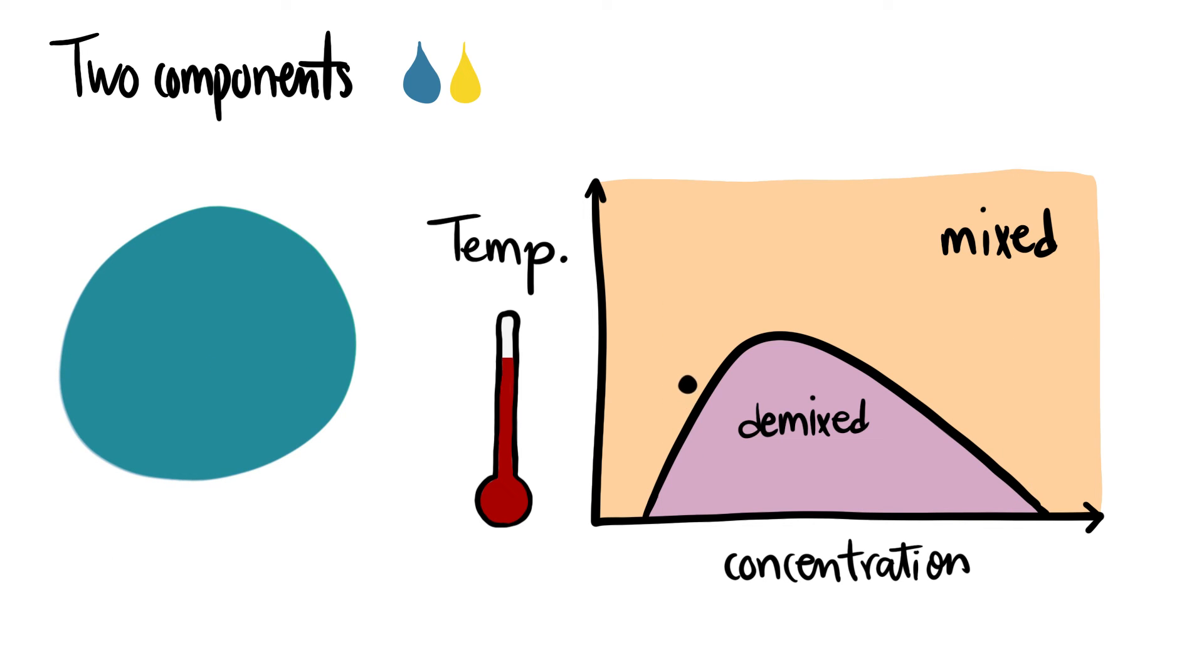If we now raise the temperature, such that the system crosses the binodal again, the phase diagram predicts that the droplets will dissolve, returning the system to a mixed state.